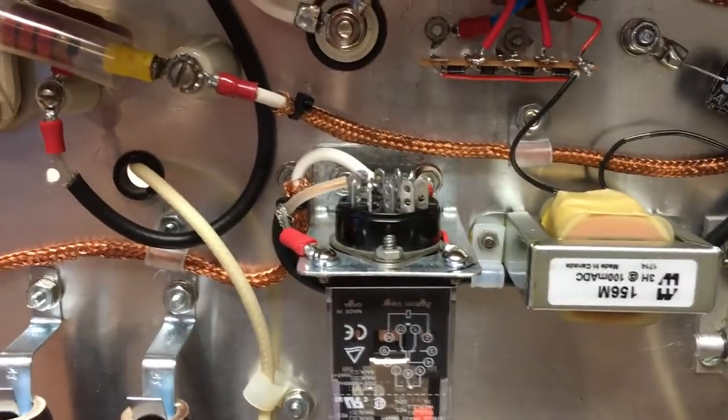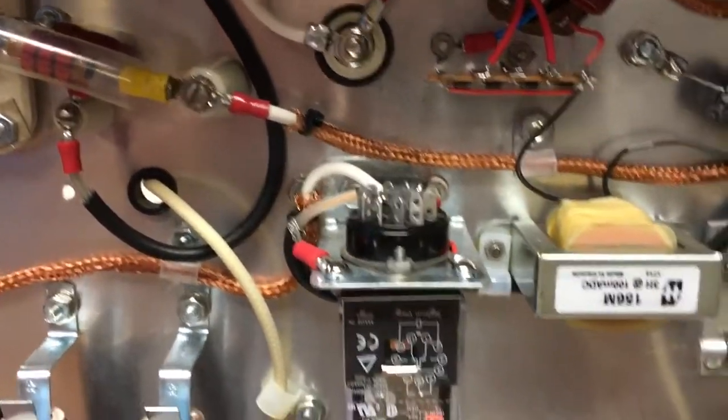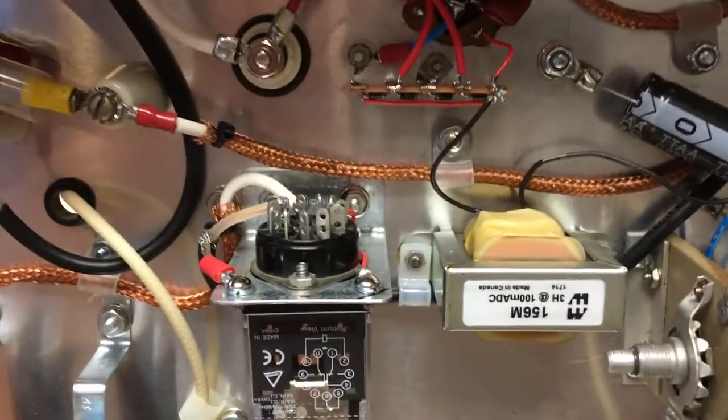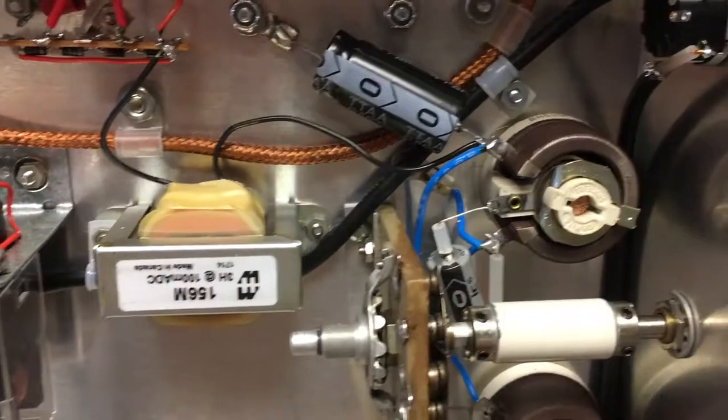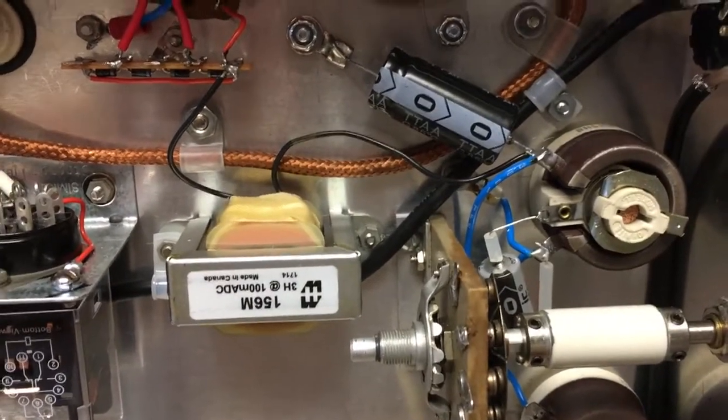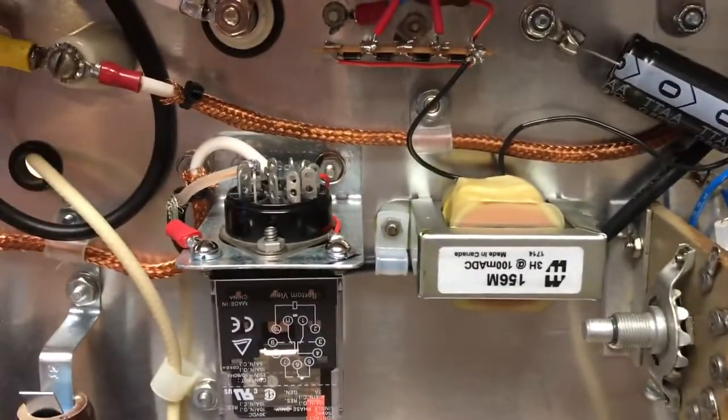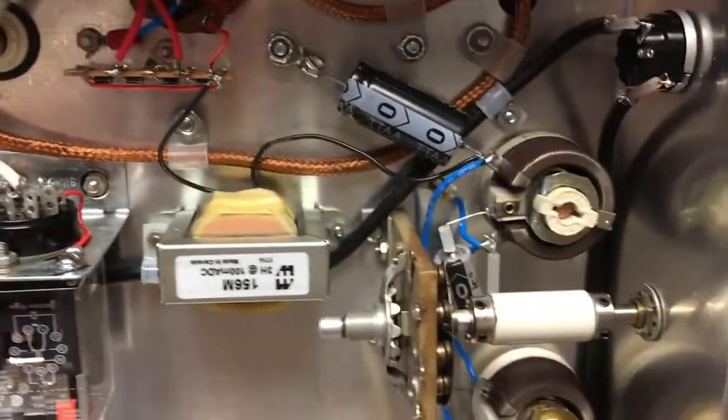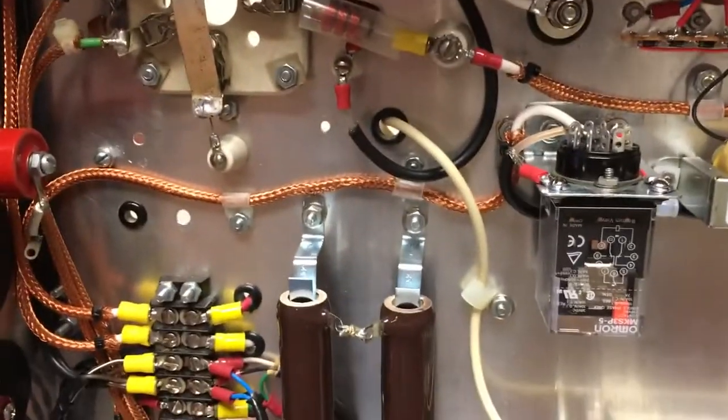I just gotta install the grid bias, the grid leak resistor and the other little odds and ends, and connect up the rest of the connections to the relay from the wipers of the rheostats from the control grid supply B bias. That's all I got left. I gotta wire that up and I'm finished, then I'm gonna button everything back down.